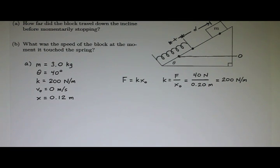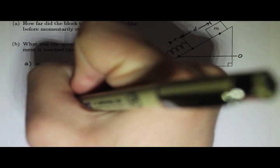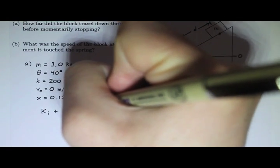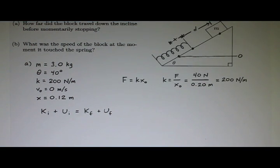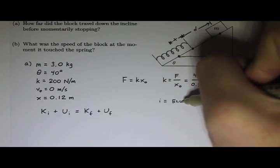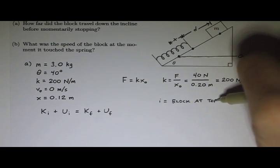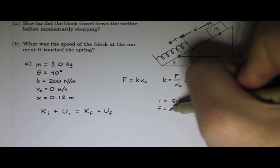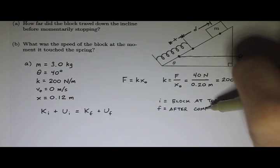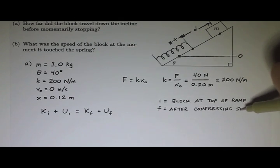So, I think I'm ready to set up my conservation of energy here. Now, I do have a frictionless incline, so I don't have to worry about any non-conservative forces here. So, I can do simple conservation of mechanical energy. It should be K initial plus U initial equals K final plus U final. And I should specify what's initial and what's final. I'm going to say that my initial is block at the top of ramp. You should always specify what initial and final are. And final is after compressing the spring.